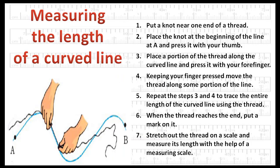Put a knot near one end of a thread. Place the knot at the beginning of the line at A and press it with your thumb. Place a portion of the thread along the curved line and press it with your forefinger.